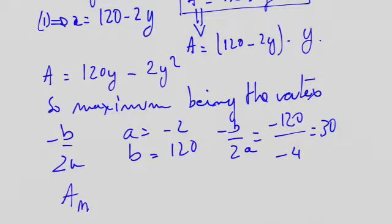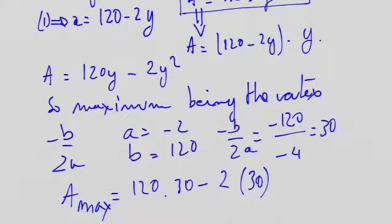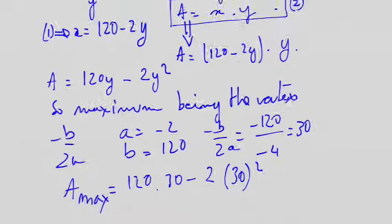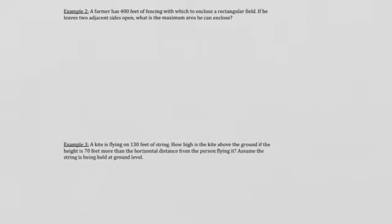So, the maximum area, A max, is going to be 120 times 30 minus 2 times 30 squared. I'll let you do the calculation at home and you will be able to tell me the value of your maximum area. So, now, I will let you do problem number 2 as well as problem number 3. Take your time. They are the same kind of problem you have seen already.